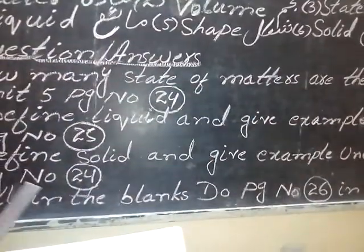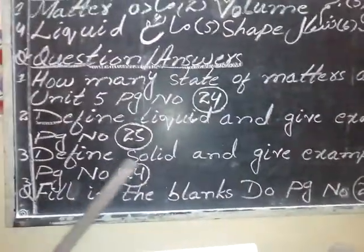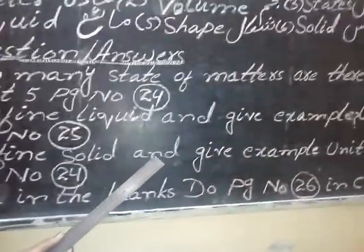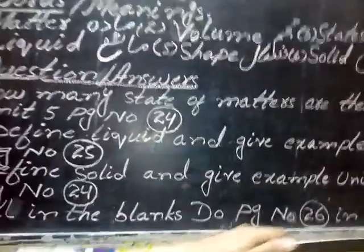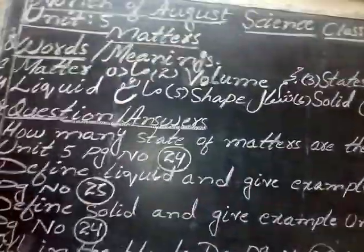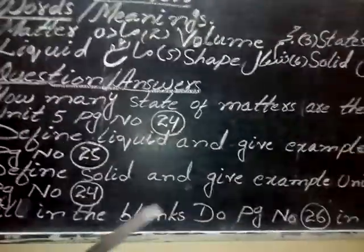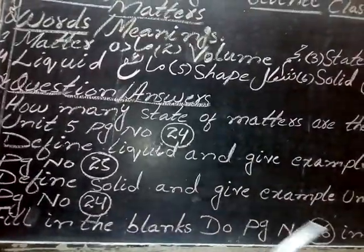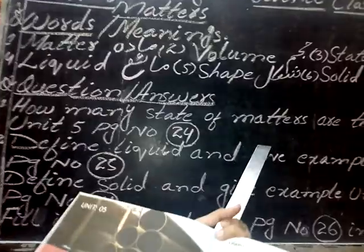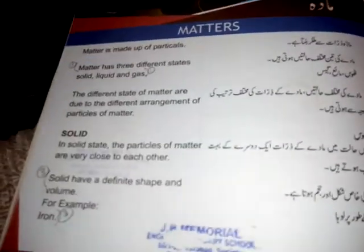Question number 3: Define solid and give an example. Unit number 5, page number 24. Solids have a defined shape and volume. For example, iron.